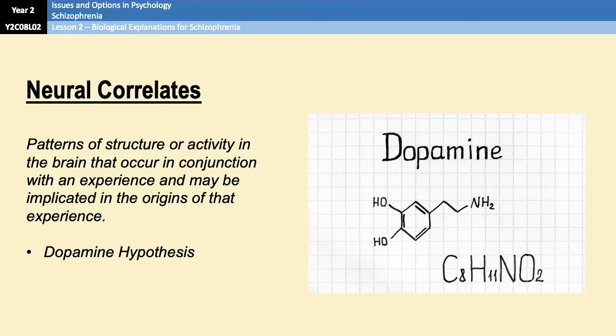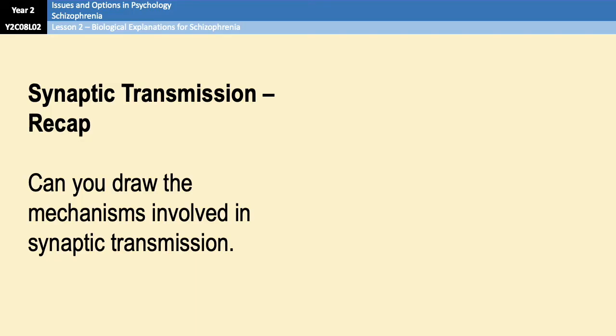Our next biological explanation is neural correlates. Neural correlates are structures or patterns of activity in the brain that correlate with the occurrence of a symptom. The dopamine hypothesis is the main neural correlate you need to know about for A-level psychology. If you'd like to pause the video and attempt to draw the mechanisms involved in synaptic transmission, please go ahead — it's a useful activity, particularly for drug treatments for schizophrenia and for the dopamine hypothesis.